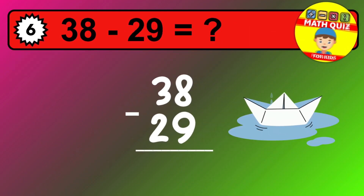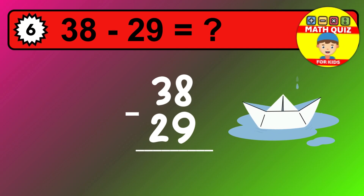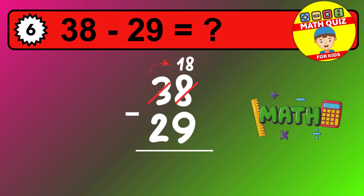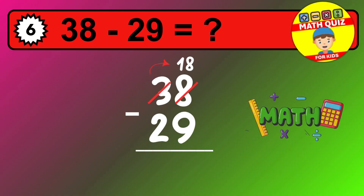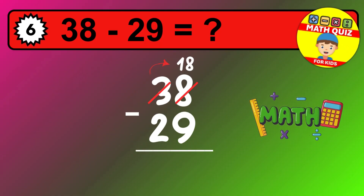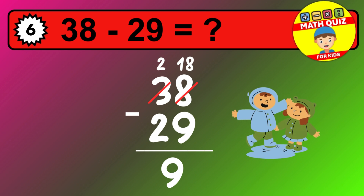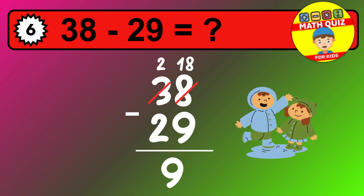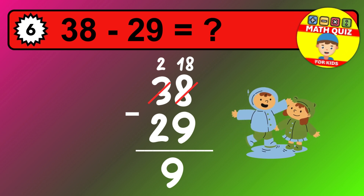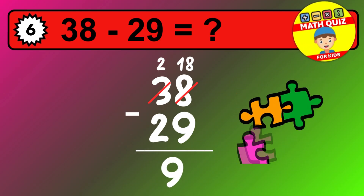Let's solve this step by step. We start with the units. 8 minus 9 is not possible, so we need to regroup. We take one 10 from the tens column. Now we have two tens, and the units become 18. Now we subtract. 18 minus 9 is 9. Then we go to the tens. 2 minus 2 is 0. The final answer is 9.